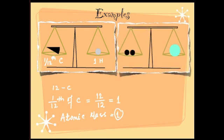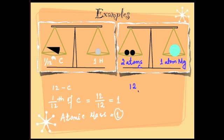Another example: two atoms of carbon balance one atom of magnesium. Since the atomic mass of carbon is 12, two atoms of carbon have a mass of 12 + 12 = 24. Therefore, the atomic mass of magnesium is 24.